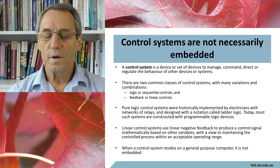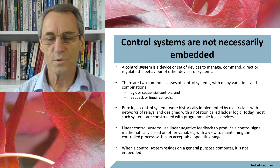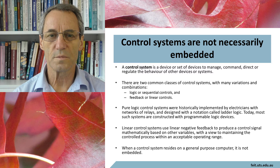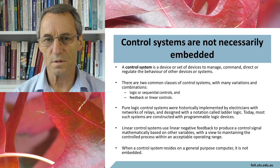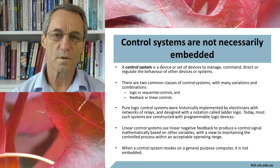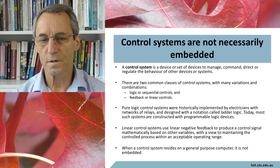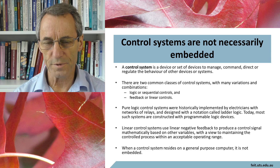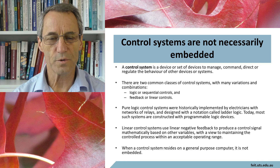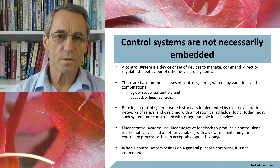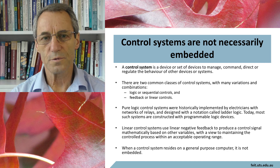When we talk about embedded systems we also talk about control systems. A control system is not necessarily embedded. A control system is a computer system built specifically to control something — it could be a general purpose computer. In fact, I've been involved in building control systems for a railway yard, and it was built on a couple of personal computers. There was nothing special purpose about those computers; it just happened to be a real-time control system.